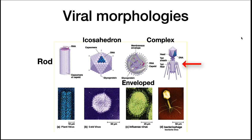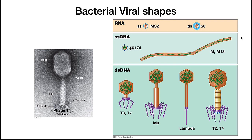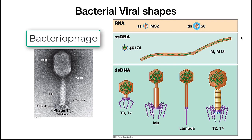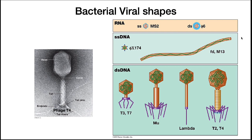Virus shapes can be complex. T4 is an example of a complex virus that infects the bacterium E. coli. Viruses that infect bacteria are called bacteriophage or phage. Most that we have studied so far are naked viruses, meaning they have no envelope, with double-stranded DNA genomes. But examples of all four possibilities — single-stranded RNA, double-stranded RNA, single-stranded DNA, and double-stranded DNA — have been found.